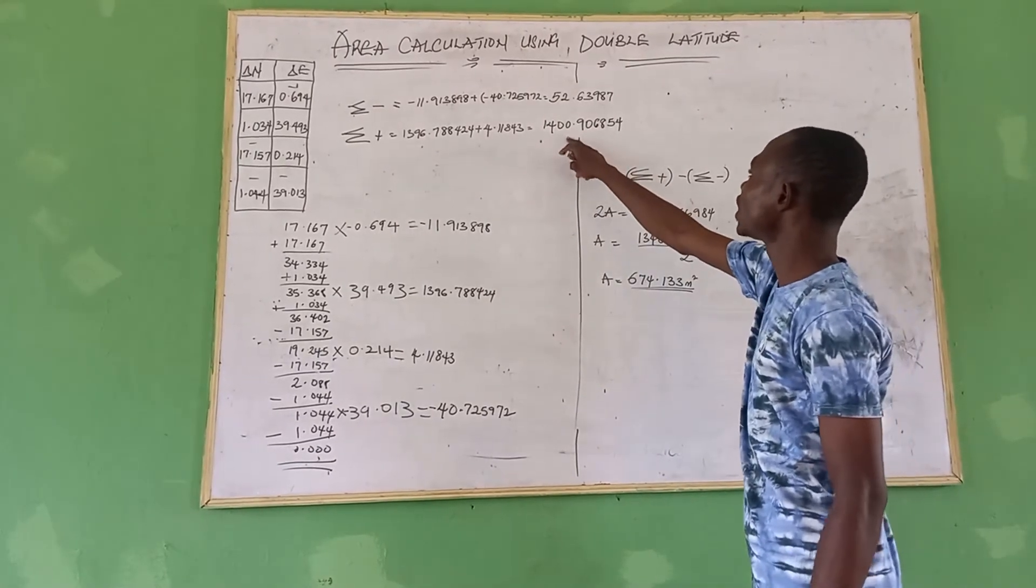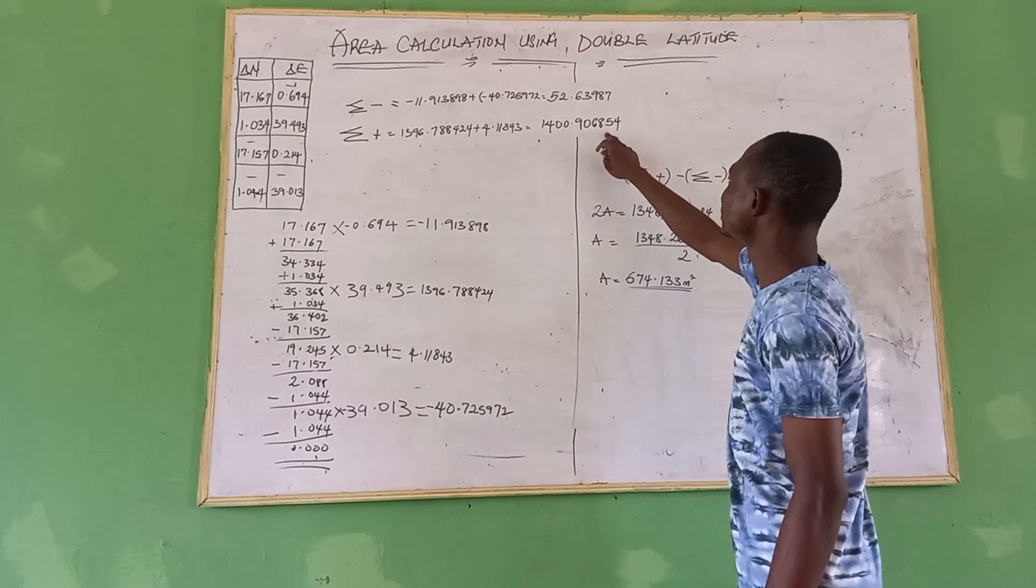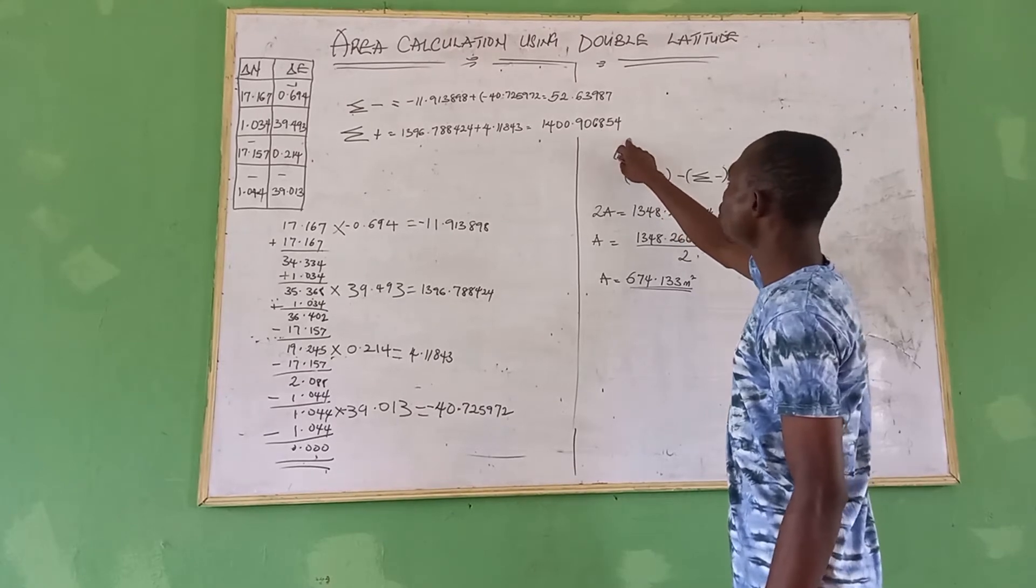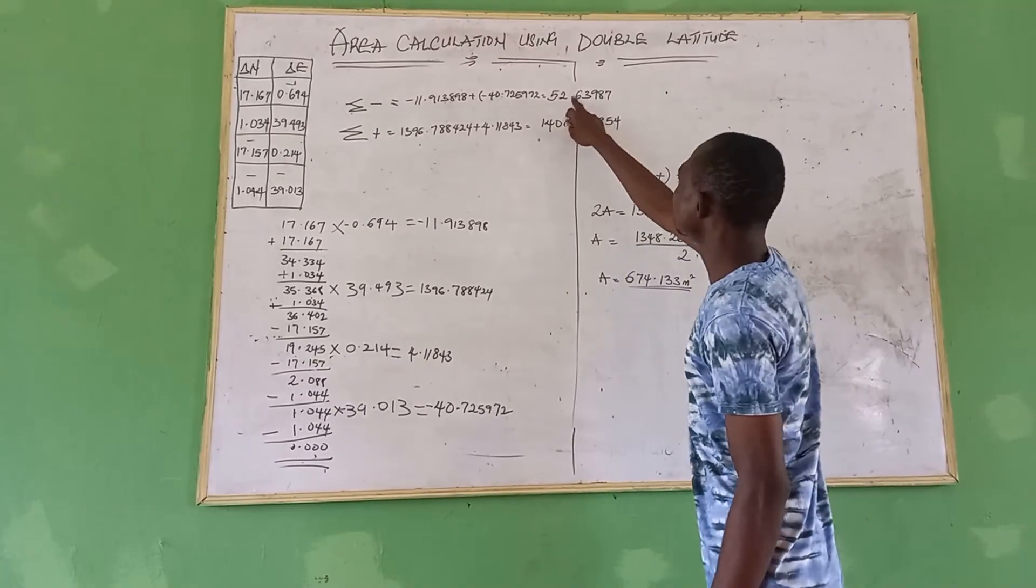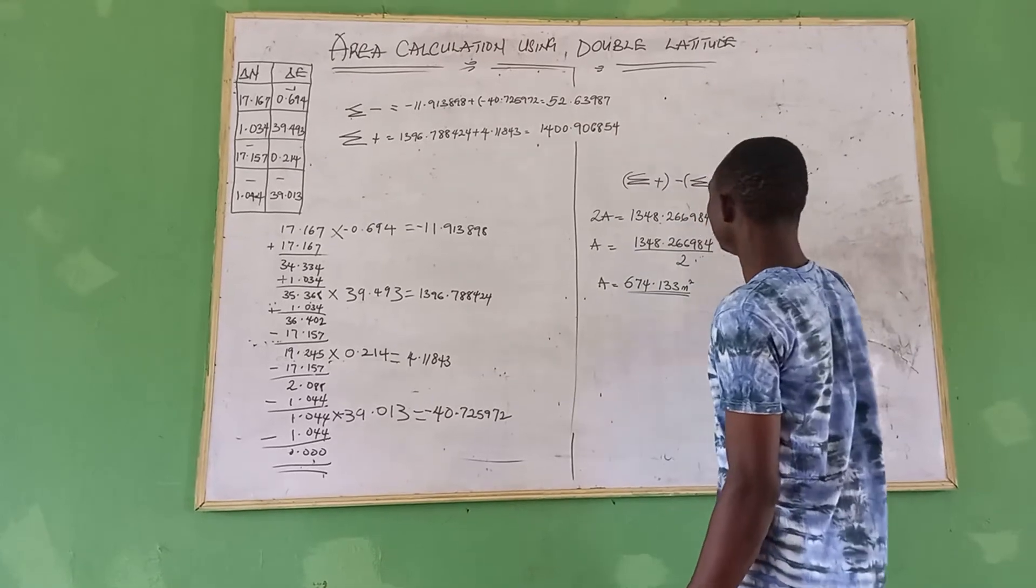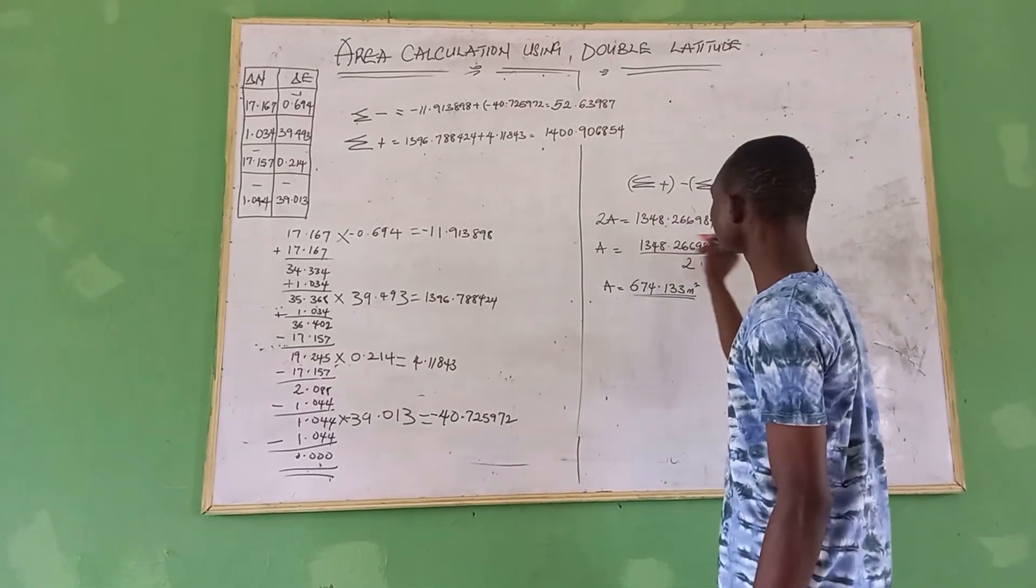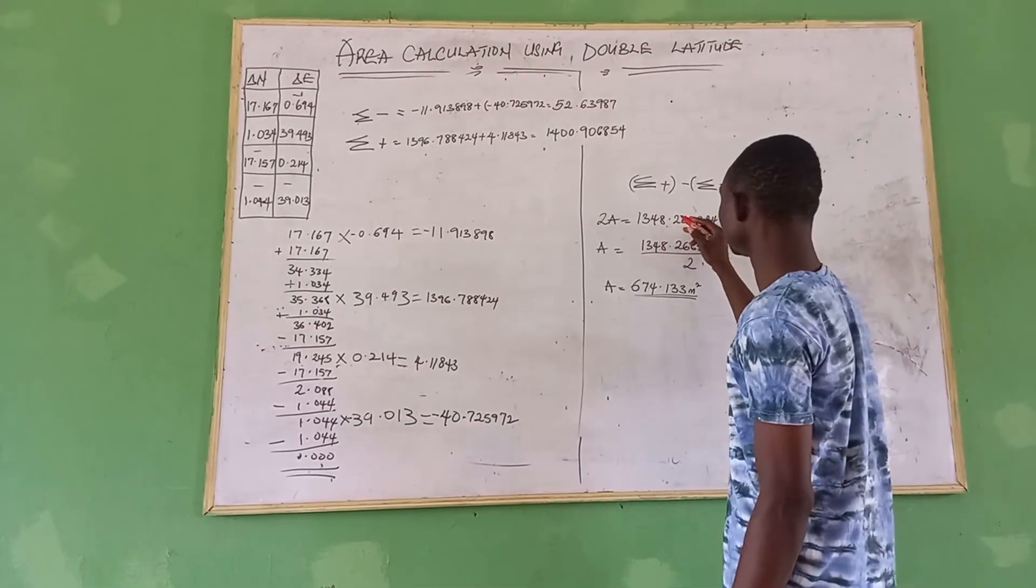That is summation of your positive, 1400.906854, minus 52.63987, will give us this value here: 1348.26698.